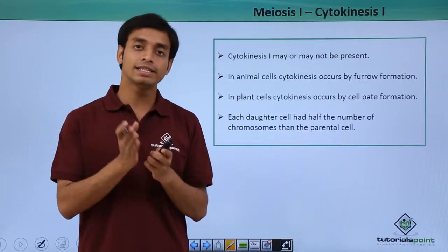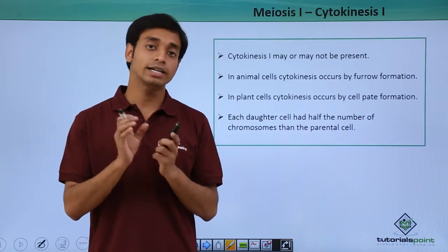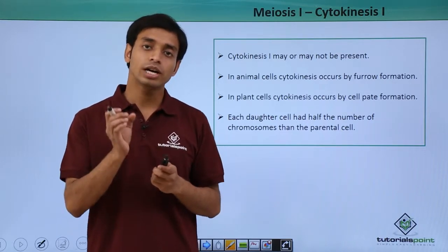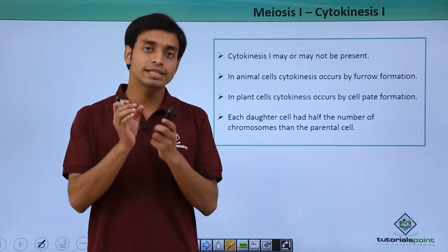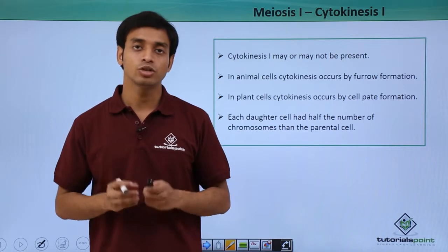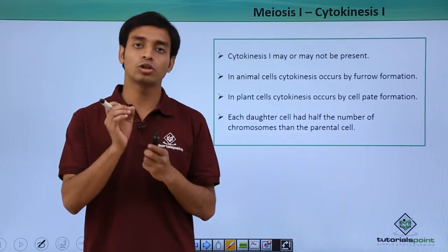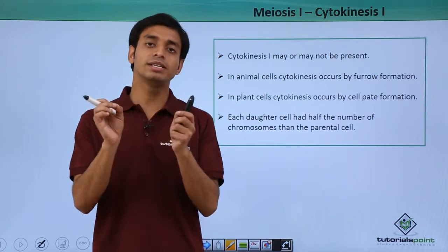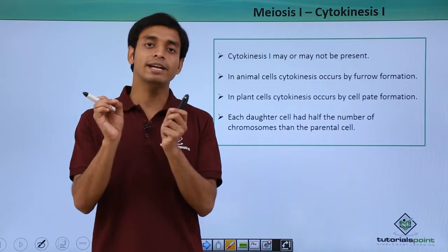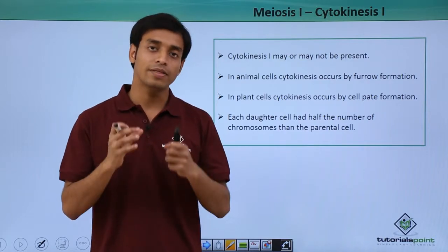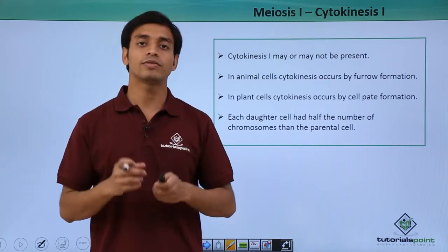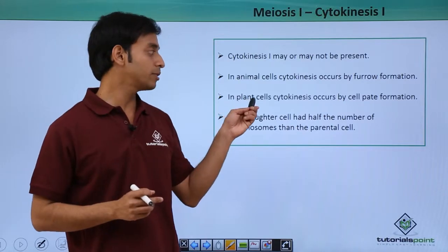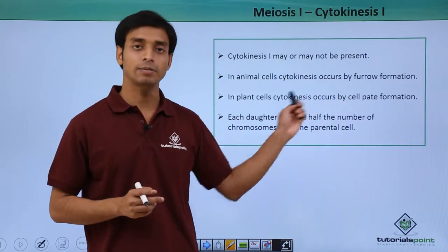In plant cells, cytokinesis results in the formation of a cell plate, which occurs at the center position of the cell. This cell plate slowly forms at the center and then meets at the end position of the cell, pinching it into two new daughter cells. So in plant cells it happens by the formation of a cell plate.